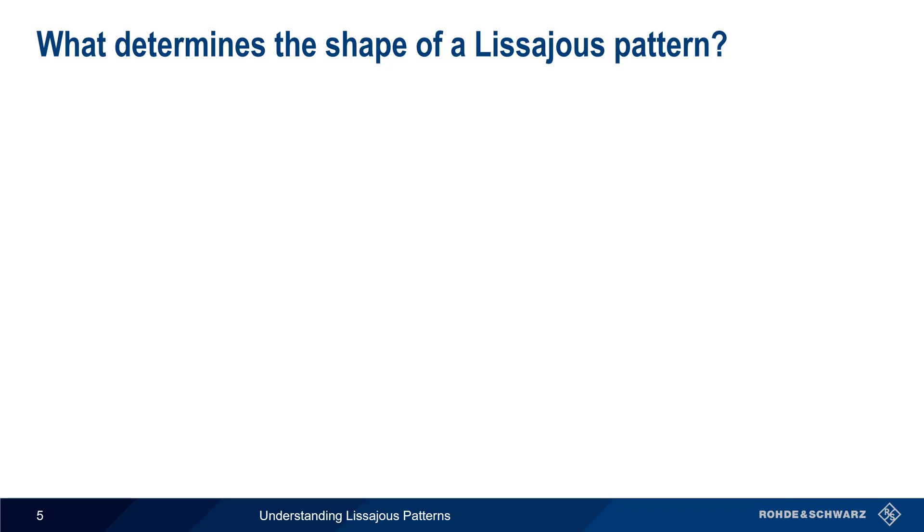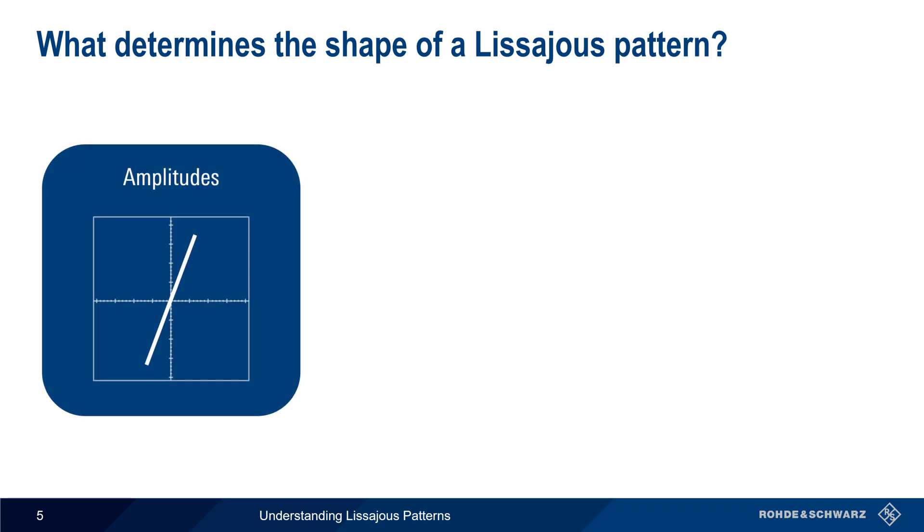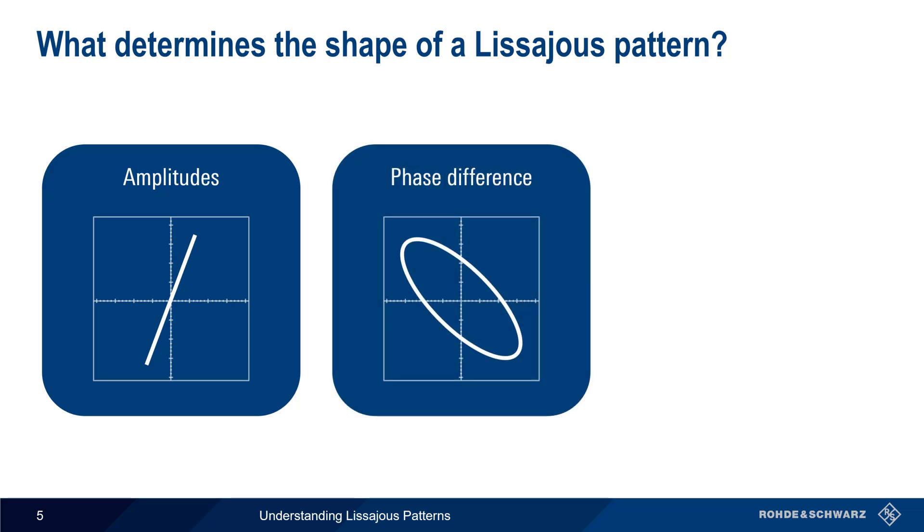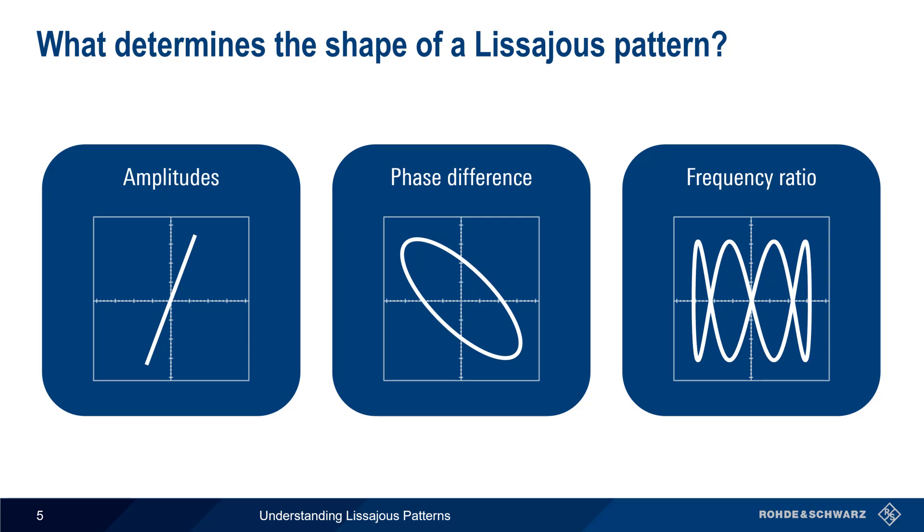The shape or appearance of a Lissajous pattern is a function of three things: the difference in amplitude between both signals, the difference in phase between both signals, and the ratio of frequencies of both signals. Let's start by looking at amplitude.